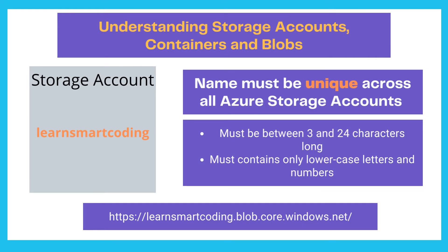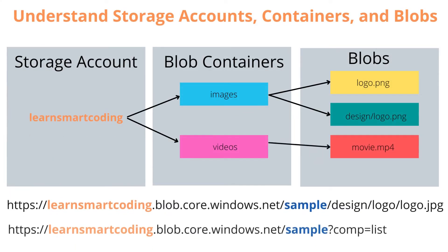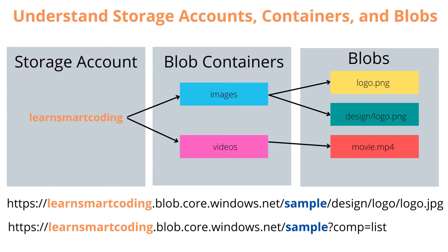You can create blob containers like images, videos, or photos once the account is created. A blob container is like a root folder for your blobs, and there is no limitation on the number of containers you can create. The blob storage is a flat object storage, so it is not possible to create actual subfolders. However, you can name your blobs with path-like prefixes — for example, 'designer/photos/images' — and upload images under that virtual path.